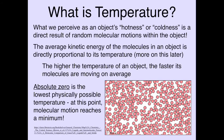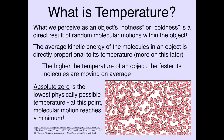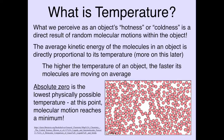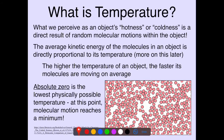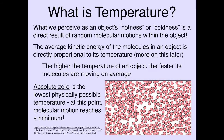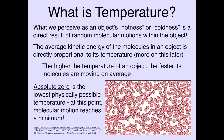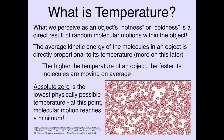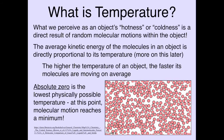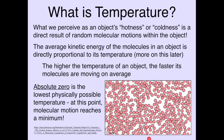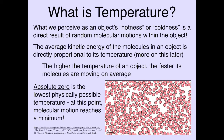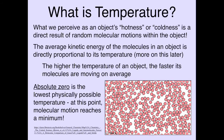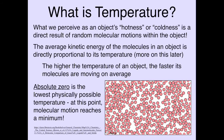The higher the temperature an object has, the faster its molecules are moving — the higher the kinetic energy of those molecules. The lower the temperature, the less motion on the molecular level, the lower the average kinetic energy. We can imagine lowering the kinetic energy continually, slowing the molecules down, which lowers the temperature. At some point you reach a minimum — there's some minimum kinetic energy these molecules can have that you can't go lower than. When you reach that point, you reach a temperature we call absolute zero, the lowest physically possible temperature.